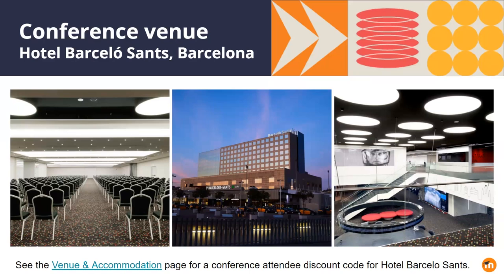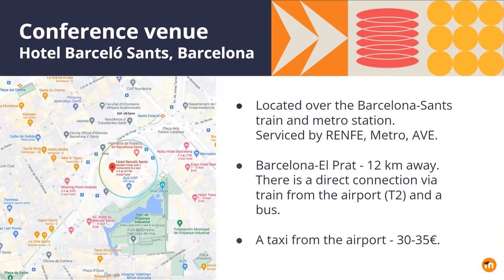Other accommodation options are available in the area and these are linked from the same page. This hotel is very well connected and it is just 500 meters away from the restaurants, bars and cafes at Plaza España and the scenic Montjuïc district. It is located above the Barcelona Sants train and metro station with direct access to the high-speed AVE and Barcelona's metro and local train links. Barcelona El Prat Airport is only 12 kilometers away, with a direct connection by train from Terminal 2, and a bus or taxi from the airport will cost around 30 to 35 euros.